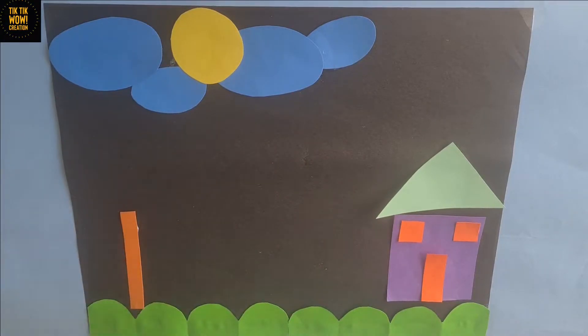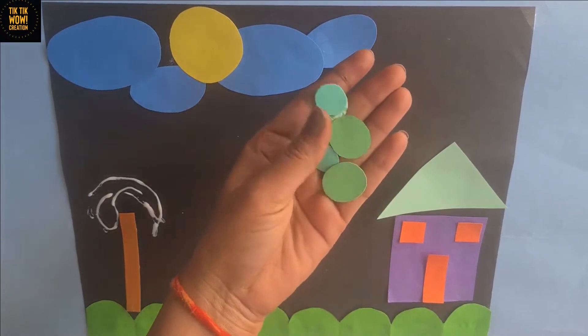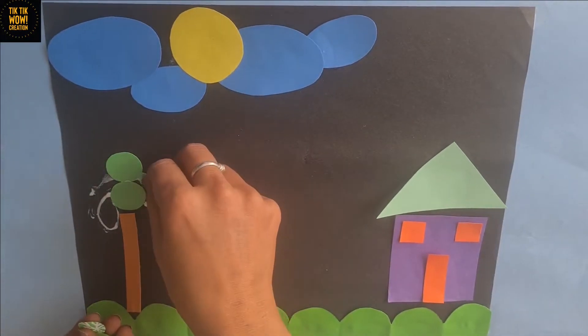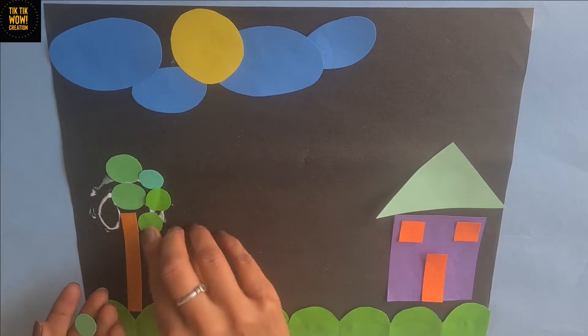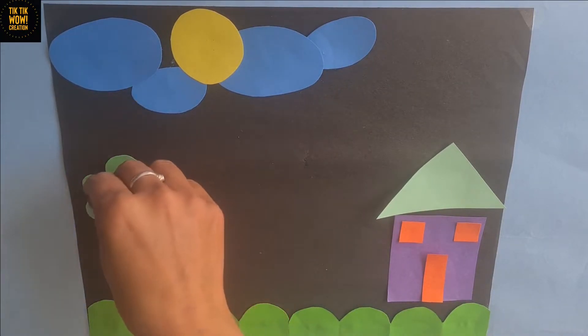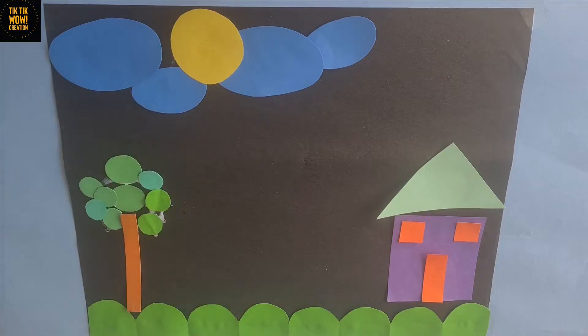Now we will make a tree pasting a rectangle shaped stem and these small circles to make upper body of trees. I am using different shades of green color, it will look more attractive.